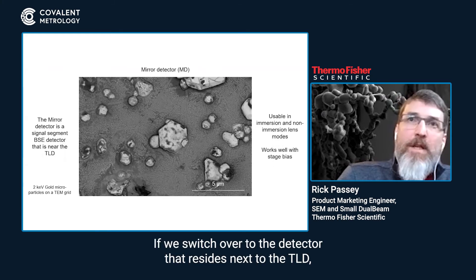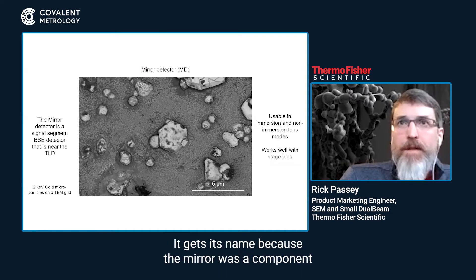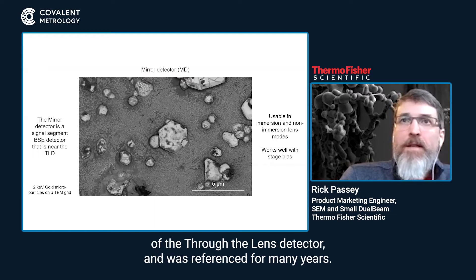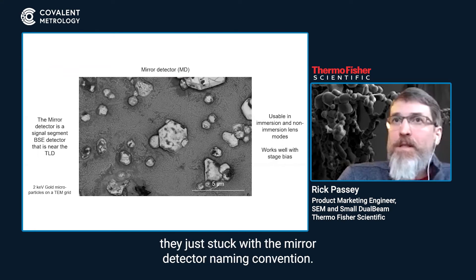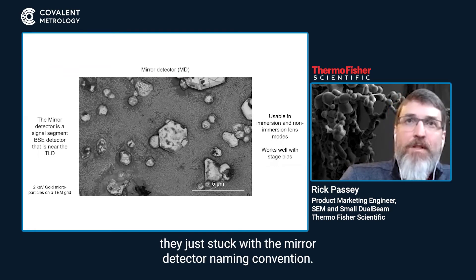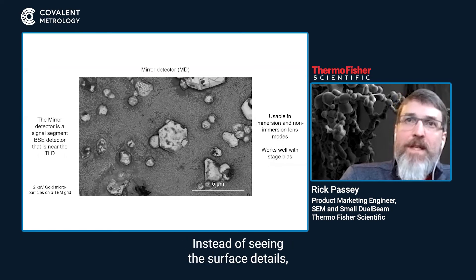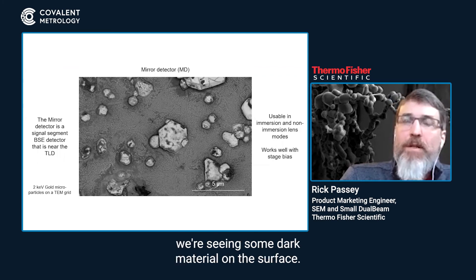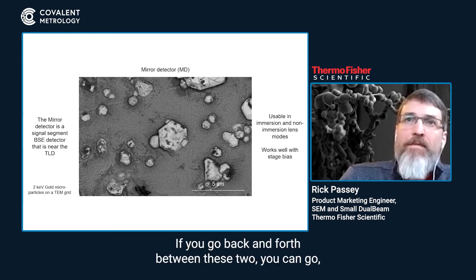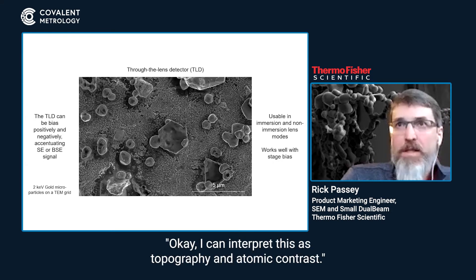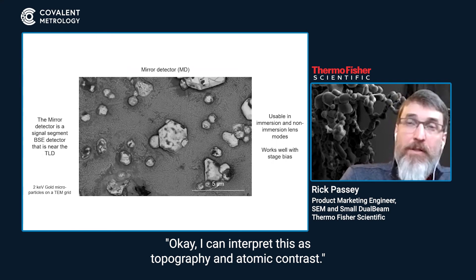If we switch over to the detector that resides next to the TLD, it's called the mirror detector. It gets its name because the mirror was a component of the through the lens detector and was referenced for many years, and when they made this into an active detector, they just stuck with the mirror detector naming convention. You can see that it's a backscatter image — we're now looking at that same hexagonal particle, but instead of seeing surface details, we're seeing some dark material on the surface. If you go back and forth between these two, you can interpret topography and atomic contrast.